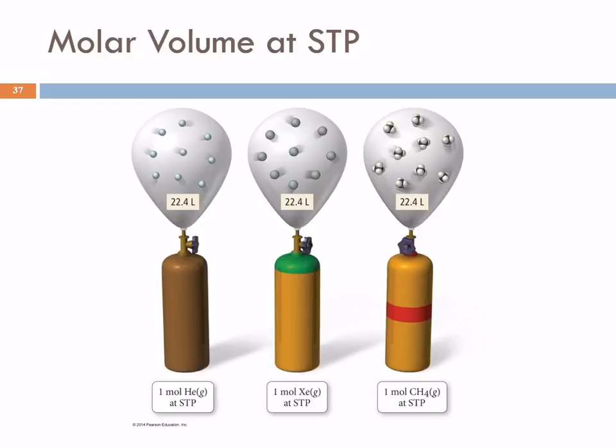Still takes up 22.4 liters of space. How could that be? There's a lot of empty space between those particles. And so, the actual size of the particle doesn't matter. Here's methane. Four hydrogen atoms and a carbon atom. That's going to take up some space, especially compared to helium. One mole of it still occupies 22.4 liters. Molar volume.